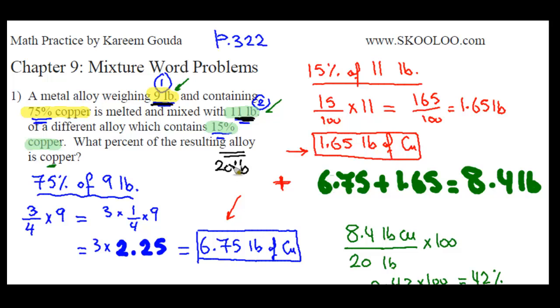We need to find the copper in the first alloy and the copper in the second alloy, add them together and then divide that number over 20. So first thing we do is we get the 75% of the 9 pounds, which is 75% copper of 9 pound alloy. 75% of 9 is 3 quarters times 9, which is 3 times a quarter times 9. A quarter of 9 is 2.25 times 3, 6.75.